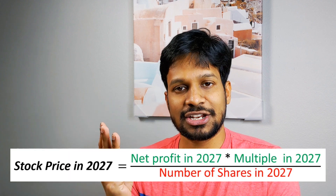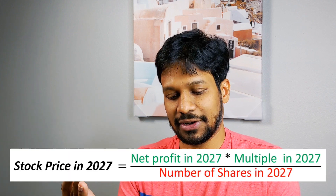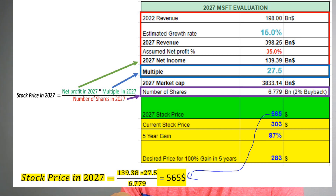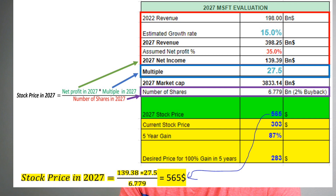Now we're almost done. We have the three numbers needed: net profit in 2027 is $139 billion, the multiple is 27.5, and we divide by 6.779 billion outstanding shares. Plugging those into the formula gives a stock price estimate of $565 in 2027. That finishes the valuation.